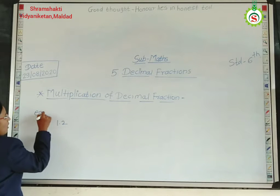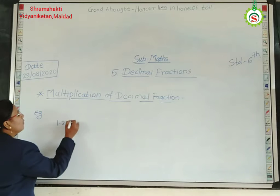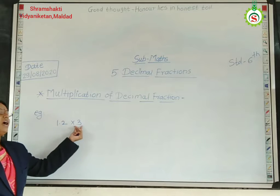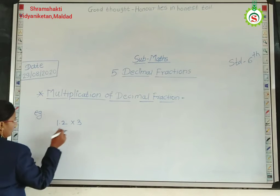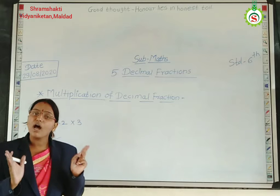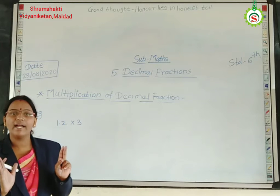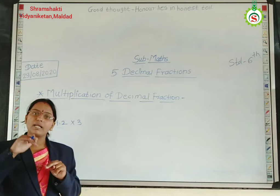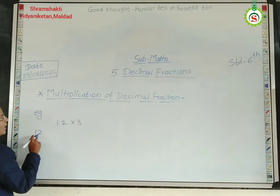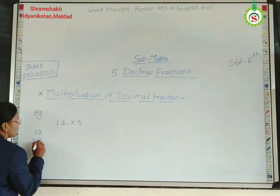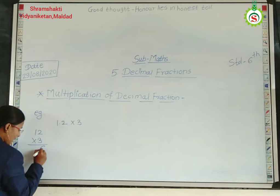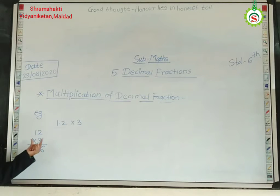Suppose we take the first example of multiplication of decimal fraction: 1.2 into 3. This type of example — only one number is a decimal fraction and the other number is 3. While doing the multiplication of a decimal fraction, you first ignore the point. Then, after multiplication, place the point in your answer. So here, I ignore the point and write down 12 as it is. 12 into 3 — 3 twos are 6 and 3 ones are 3. The answer is 36.